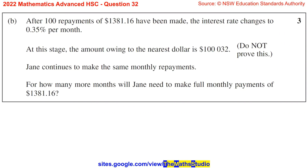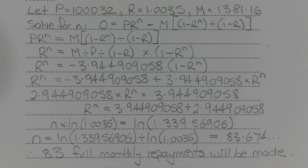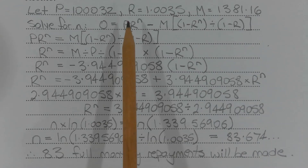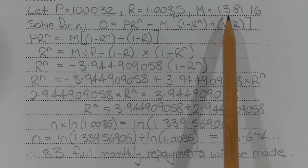Part B. After 100 repayments of $1,381.16 have been made, the interest rate changes to 0.35% per month. At this stage, the amount owing to the nearest dollar is $100,032. Do not prove this. Jane continues to make the same monthly repayments. For how many more months will Jane need to make full monthly payments of $1,381.16? A new geometric series must be defined because the interest rate has changed. The new ratio is 1.0035. So let P equal 100,032, R equals 1.0035, and M equals 1,381.16.